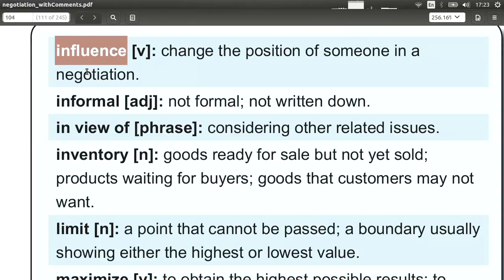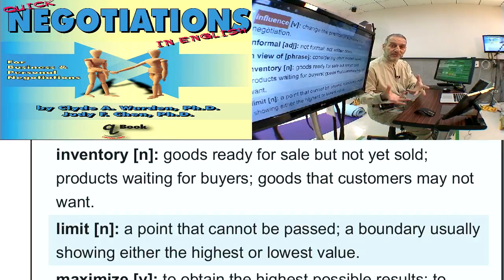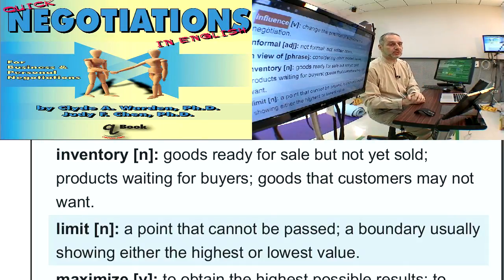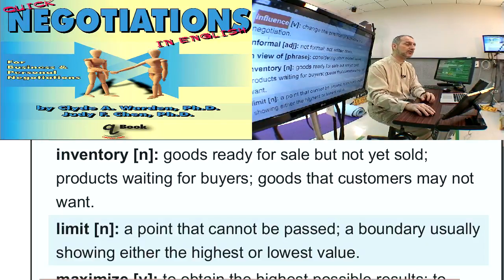Influence means that you say something or do something that makes the other side change their position or opinion. A very simple example: when you go to buy something and ask for a lower price and the manager says, I can't give you a lower price — that's already below my cost, I cannot sell you this at that price. That will make you think, that must be true — that's influencing you. Of course, all of negotiation is about influence. You do not use this word in the negotiation itself; you use it in your planning — how can you influence the other side?